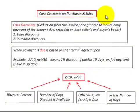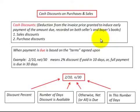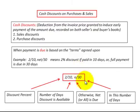In this presentation, we're going to look at cash discounts on purchases and sales. A cash discount is a deduction off the invoice price, and it's recorded both in the buyer's and seller's books — either as sales discounts or purchase discounts. The basic nomenclature would be something like 2/10 net 30.